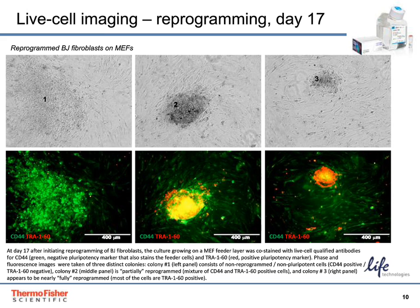This slide shows the reprogramming process at day 17. Phase and fluorescent images were taken of three distinct colonies. Colony number one consists of non-reprogrammed, non-pluripotent cells that stain positive for CD44 and negative for TRA160 markers. Colony number two is partially reprogrammed because it shows a mixture of CD44 and TRA160 positive cells. Colony number three appears to be nearly fully reprogrammed as most of the cells are positive for the TRA160 marker.